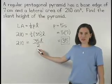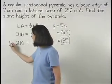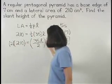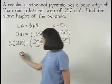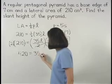Now, to get rid of the fraction, we multiply both sides of the equation by 2 to get 420 equals 35 l.